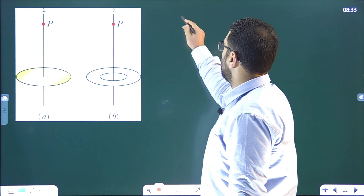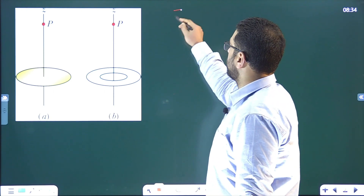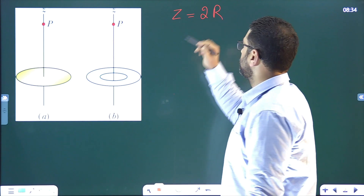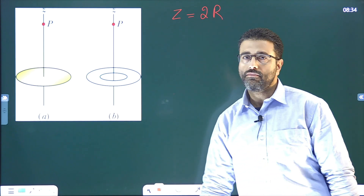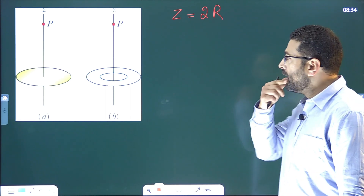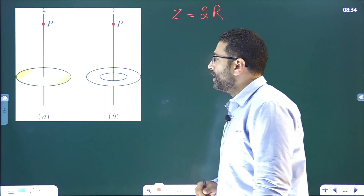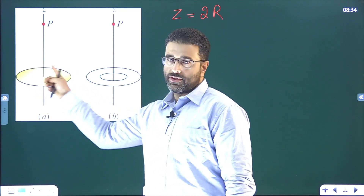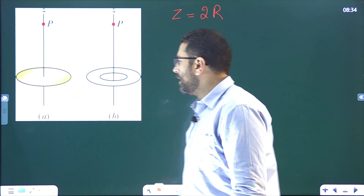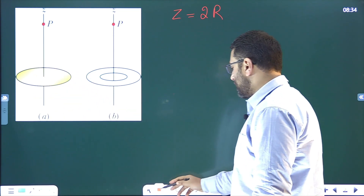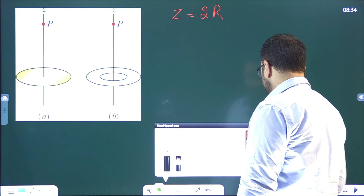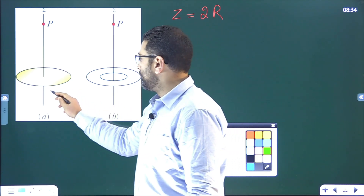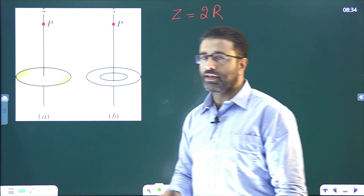The distance we are interested in is z equal to 2r. Now, here we have a disk — a uniformly charged disk. This is the charge density; let's suppose that is sigma. The charge density is sigma.